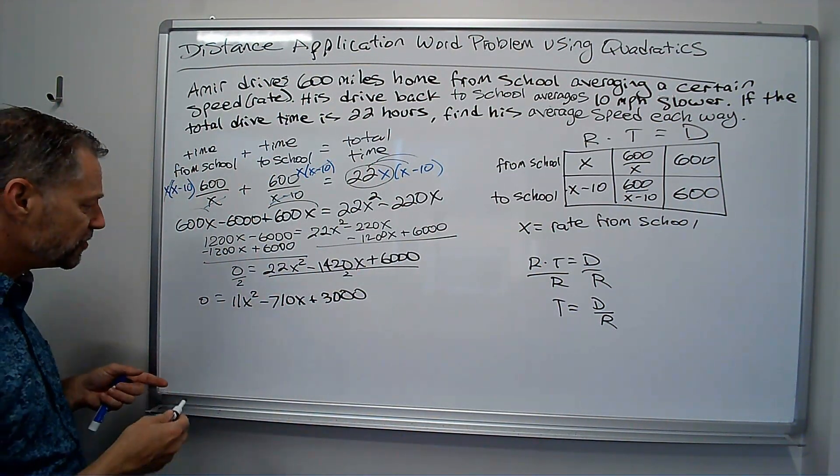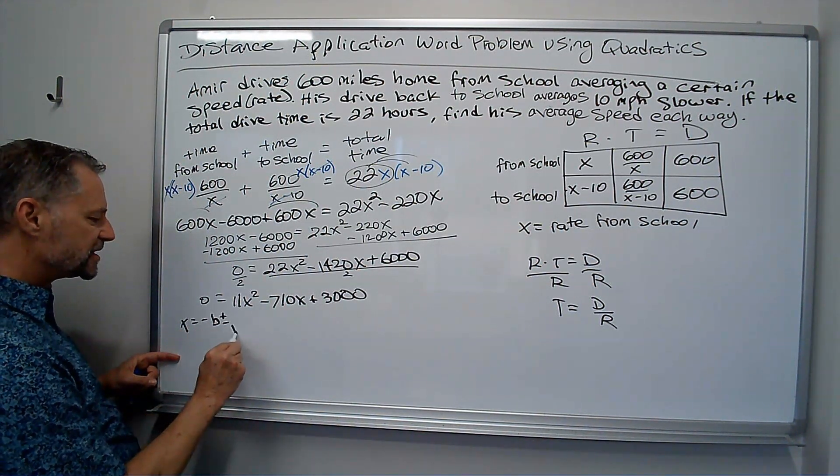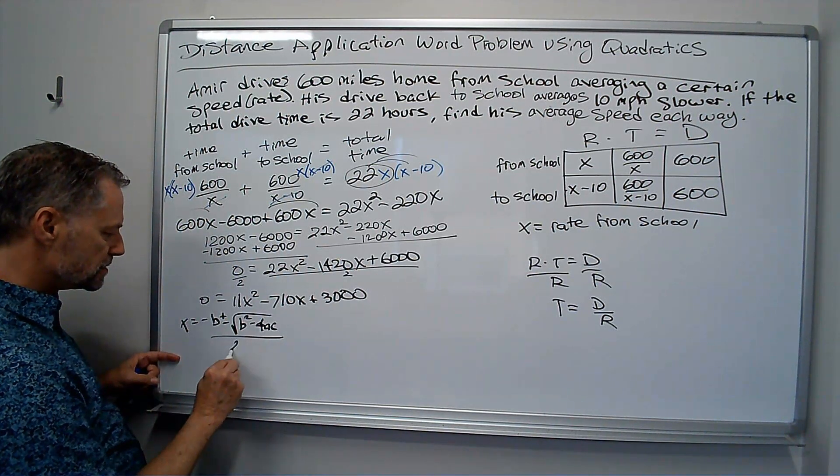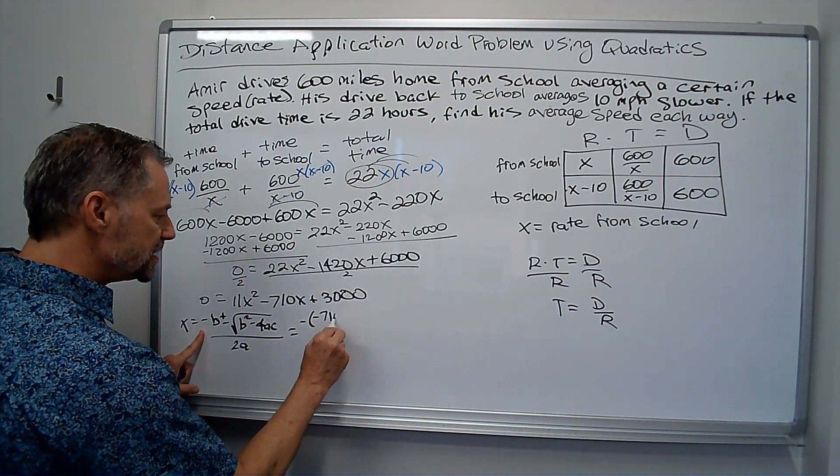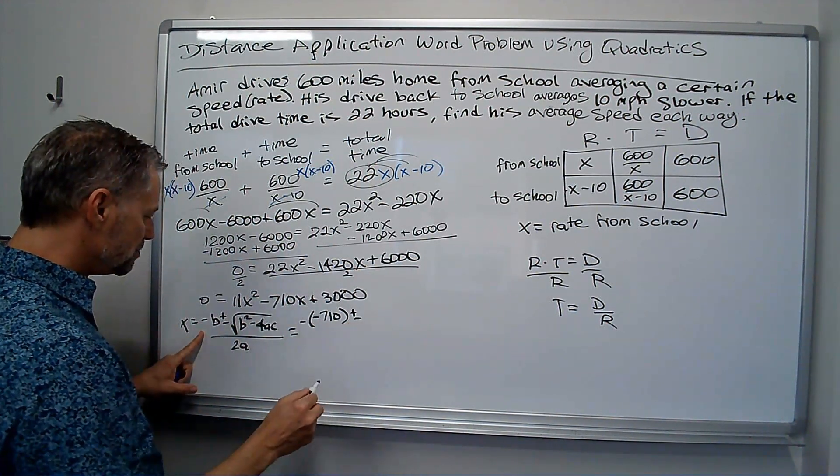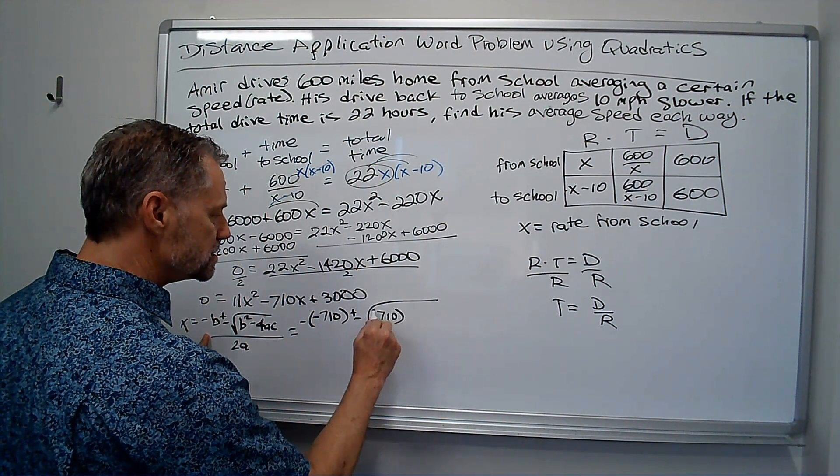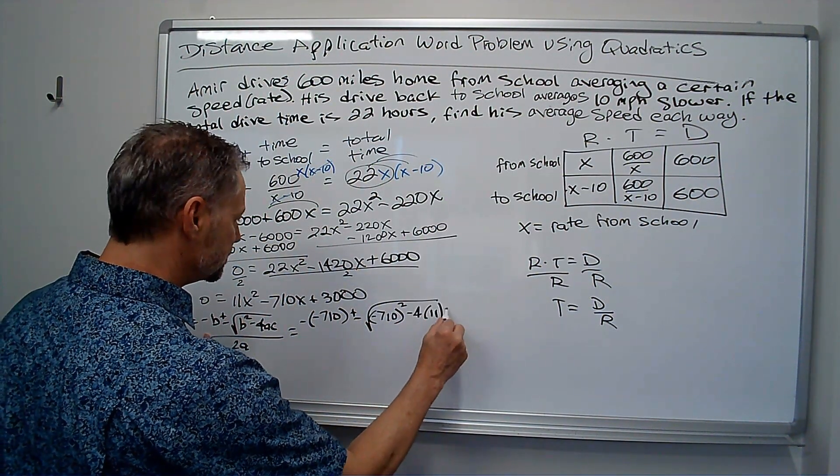So, I'm just going to use the quadratic formula. Remember, it's X equals negative B plus or minus the square root of B squared minus 4AC all over 2A. So, I get the opposite of negative 710 plus or minus the square root of negative 710 squared minus 4 times 11 times 3,000.